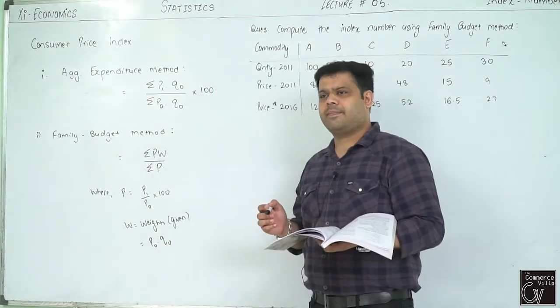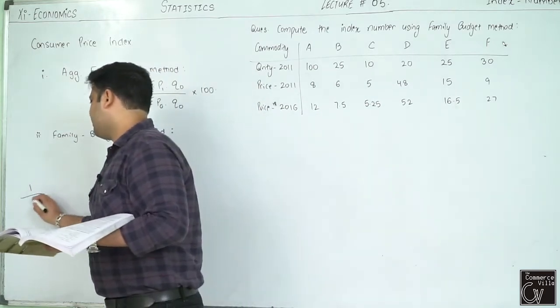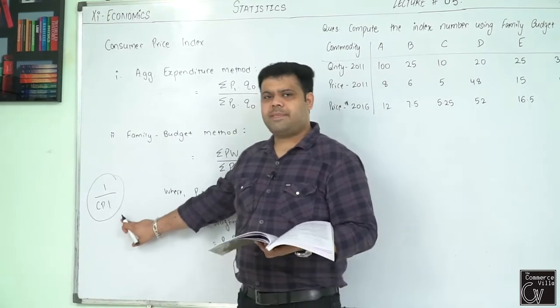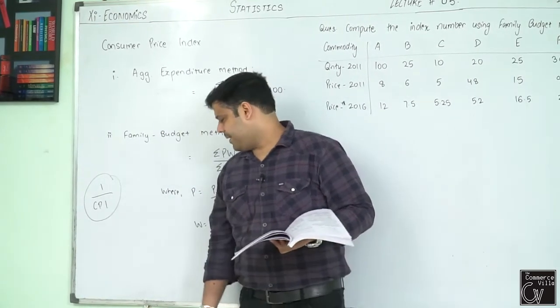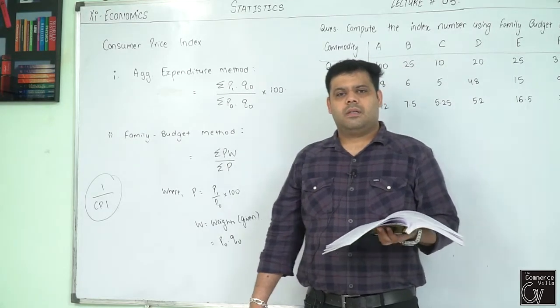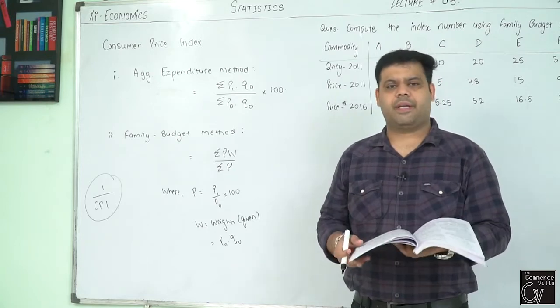Write one more line. Purchasing power of consumer. Write this under family budget method. Purchasing power of consumer is 1 upon CPI. We will compute purchasing power in this question.